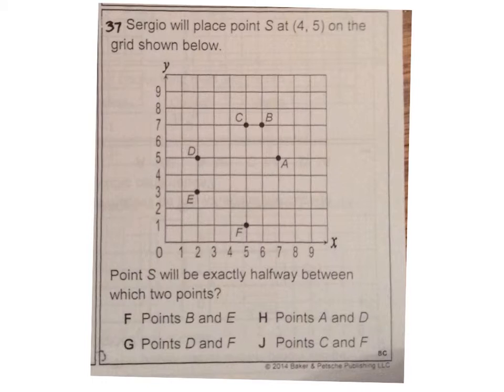Number 37. Sergio will place point S at 4,5 on the grid shown below. Point S will be exactly halfway between which two points.